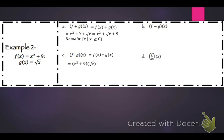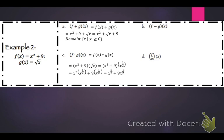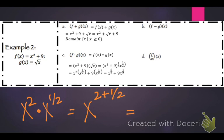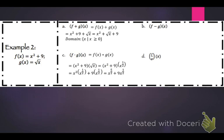For f of x times g of x, that's x squared plus 9 times the square root of x. The square root of x is the same as x to the 1 half power, so we can multiply that in. We have x squared times x to the 1 half plus 9 times x to the 1 half. Since x squared times x to the 1 half equals x to the 5 halves — because 2 plus 1 half equals 5 halves — the result is x to the 5 halves plus 9x to the 1 half. The domain is x such that x is greater than or equal to 0.